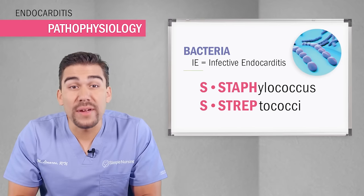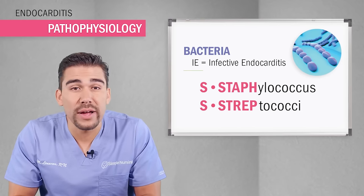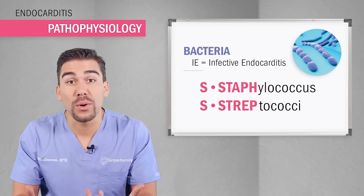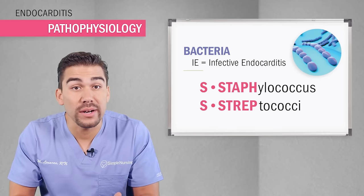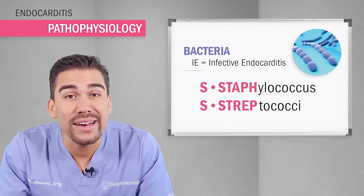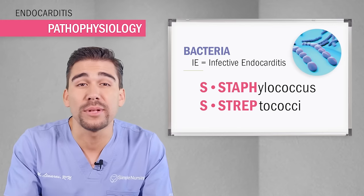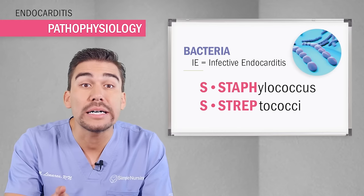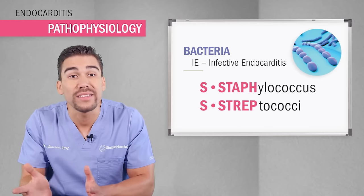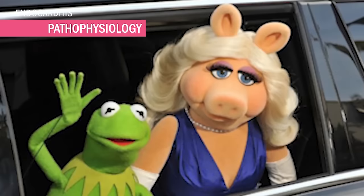The most common infections are from the evil double S's — staph and strep infection. Staph is the number one offender, but strep throat infections — the kind everyone gets every year — are also a major cause. If you don't treat those with antibiotics, that strep infection can get into the bloodstream and cause endocarditis, and even infect the lungs causing pneumonia and then death.